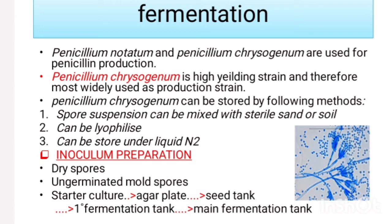After the incubation period, the culture is transferred from the seed tank to a primary fermentation tank, and then to a main fermentation tank or larger fermentation tank, which provides the proper environment for the production of penicillin.